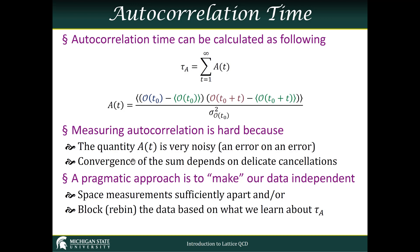So a pragmatic approach is to just make our data independent. Instead of trying to do this actual scaling, we'll block our data such that the data outside of these blocks is so far apart that it's definitely greater than the autocorrelation time.